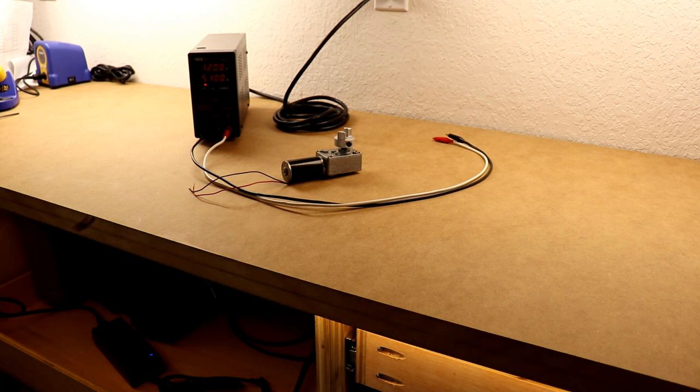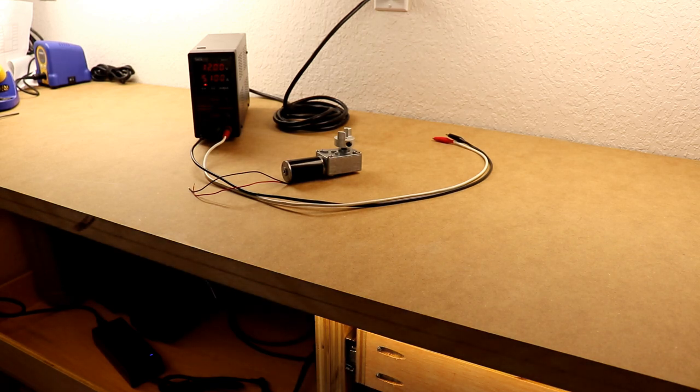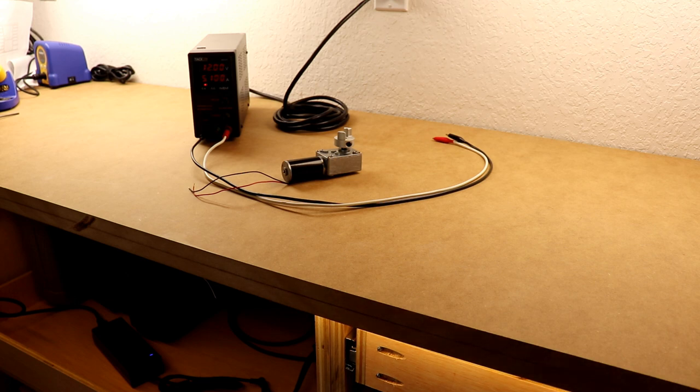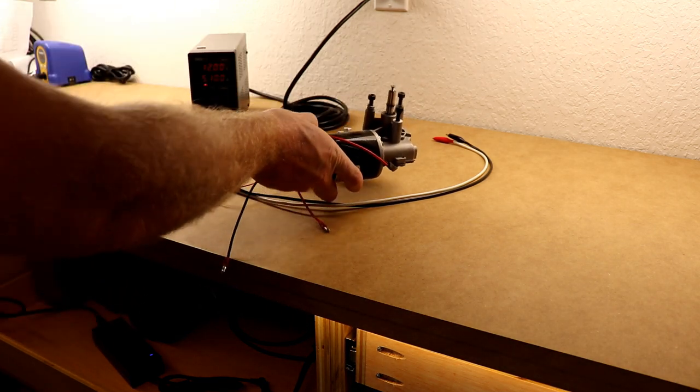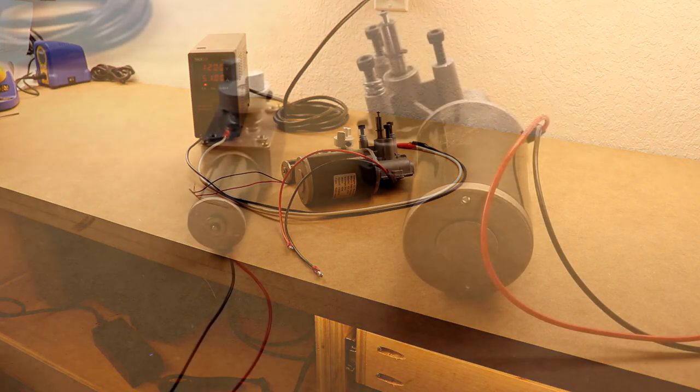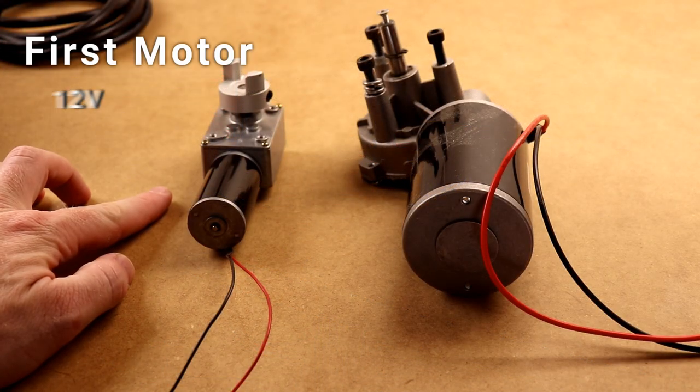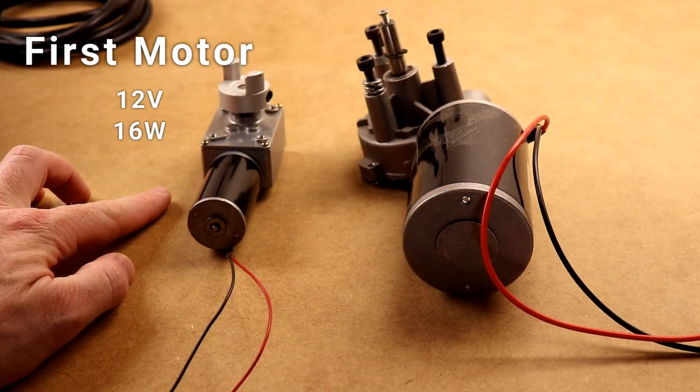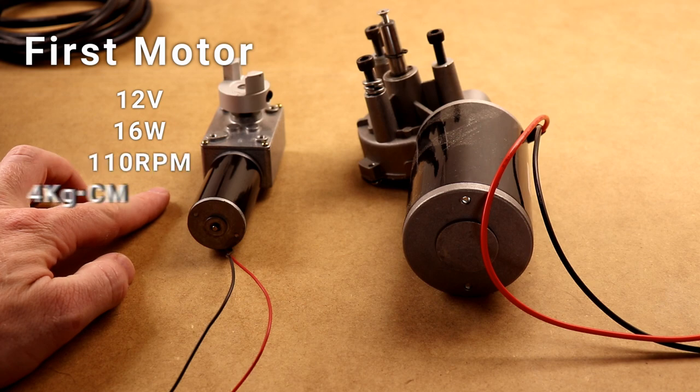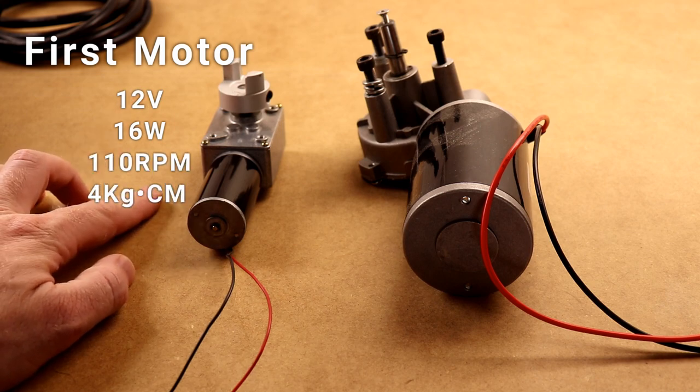And so instead of going with that and being frustrated with it, I went out and secured a bigger gear motor. So this one was 12 volts, 16 watts, 110 RPM, and 4 kilograms per centimeter of torque. This is 24 volts, 80 watts, and 160 RPMs.